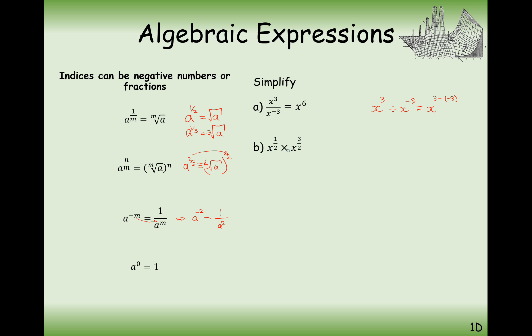Next, x to the power of a half times x to the power of 3 over 2. Remember, when we multiply indices with the same base letter, we add the values. So this gives us x to the power of 1/2 + 3/2, which is x squared.